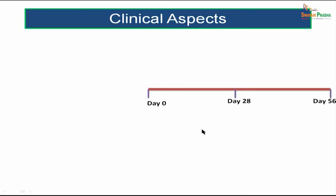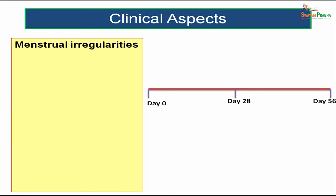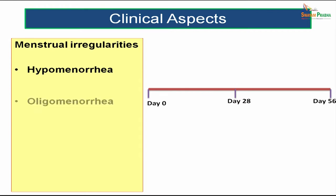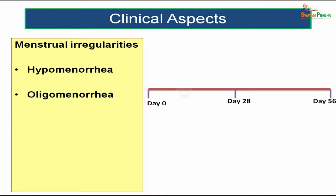Before moving on to the topic proper, let's discuss some of the clinical aspects. We all know about menstrual irregularities. The first one being hypomenorrhea — a condition where we get scanty blood flow during our regular periods. Another condition is oligomenorrhea, where we get blood flow even after 30 to 35 days. Sometimes we might get intermittent blood flow before the onset of the next period; that is known as metrorrhagia.